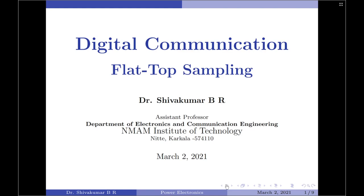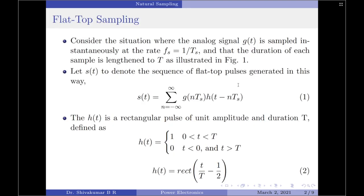Flat top sampling, unlike natural sampling, is basically based upon the ideal sampling theorem. That is, we are going to first perform instantaneous sampling of the input data, and then we are going to extend the width of each instantaneous pulse to create or make it look like a rectangular pulse — that is the original idea behind flat top sampling.